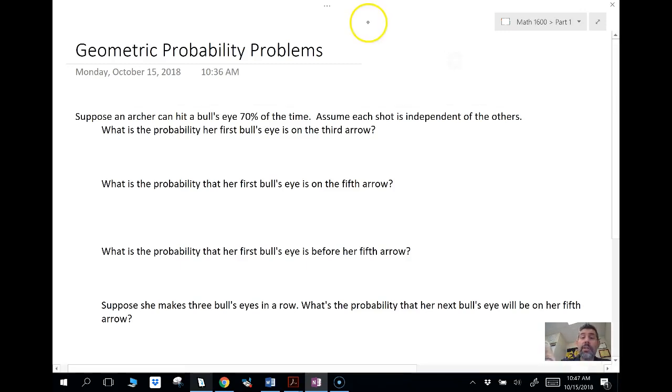So first success. The keywords we're looking for are first, maybe before. And the formula we're going to use is the probability of failure, which is 1 minus p, raised to k minus 1, which is the number of failures, times the probability of success.